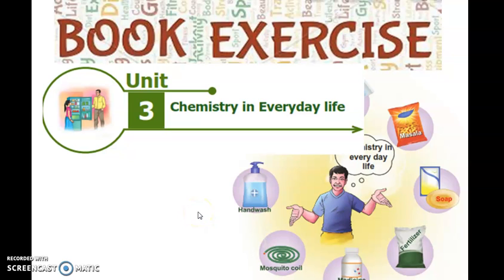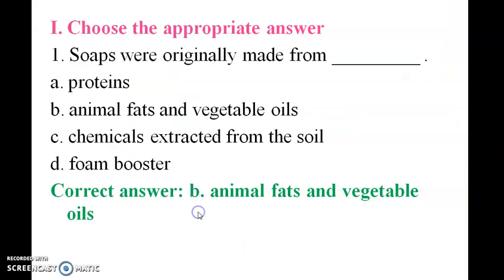Good morning students. Today we are going to see the book exercise of chemistry in everyday life. First one: choose the appropriate answer. Soaps are originally made from — proteins, animal fats, vegetable oils, or chemical extract?